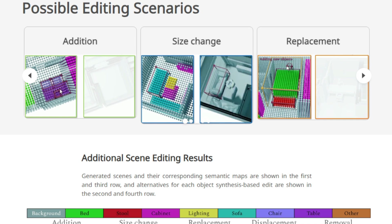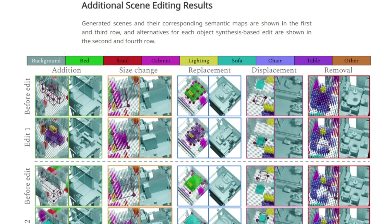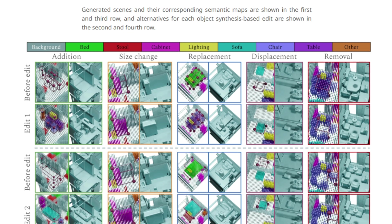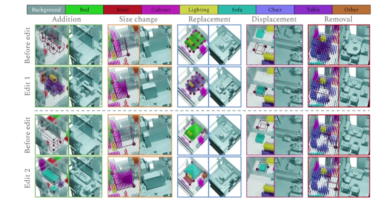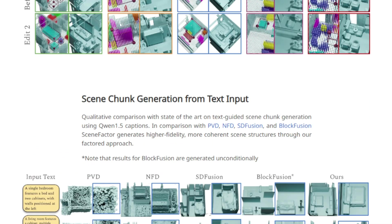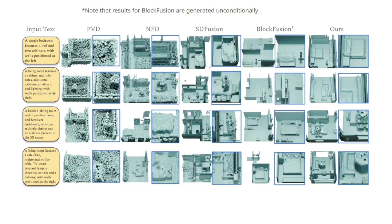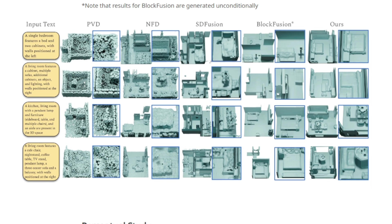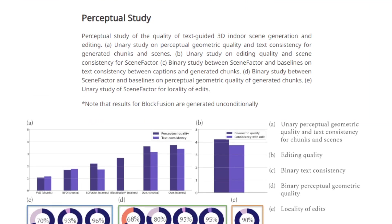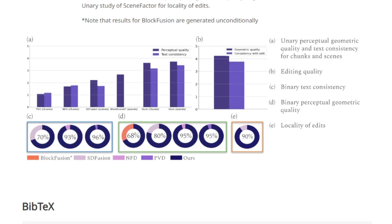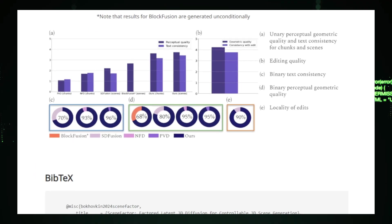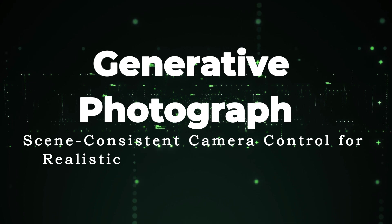Moreover, Scene Factor excels in scene customization. Users can easily modify the 3D space by adjusting the semantic boxes, repositioning furniture, resizing elements, or adding and removing objects, all while ensuring the scene remains coherent. Scene Factor produces high-quality, detailed 3D scenes that are structurally sound and visually consistent, surpassing previous methodologies. Its versatility makes it suitable for uses ranging from virtual reality and gaming to architectural visualization and dynamic 3D content development.